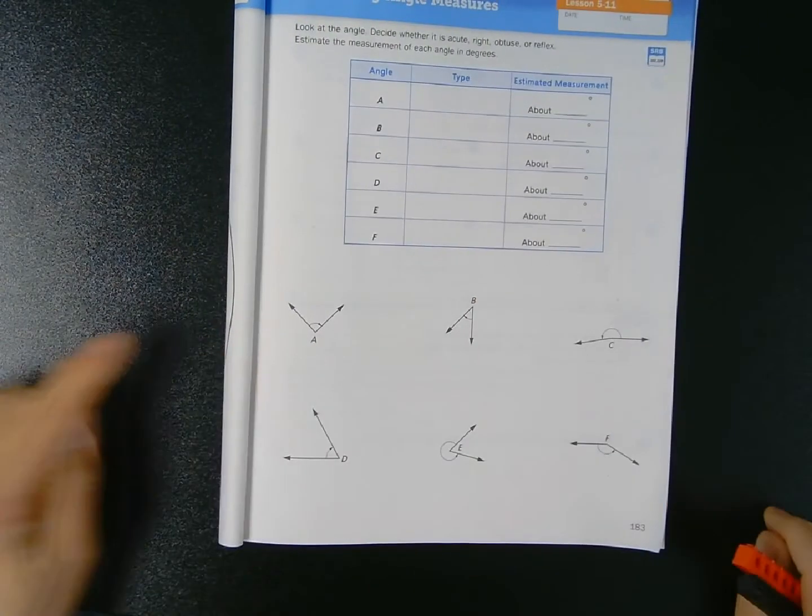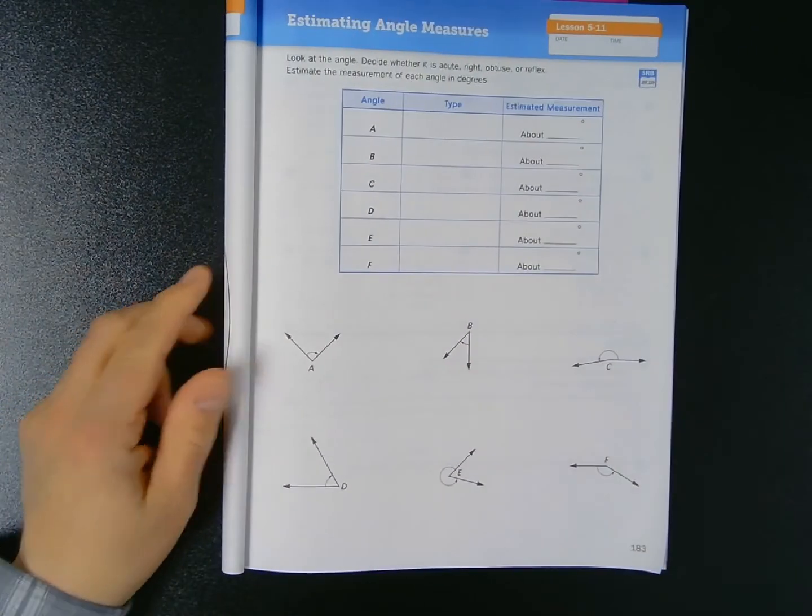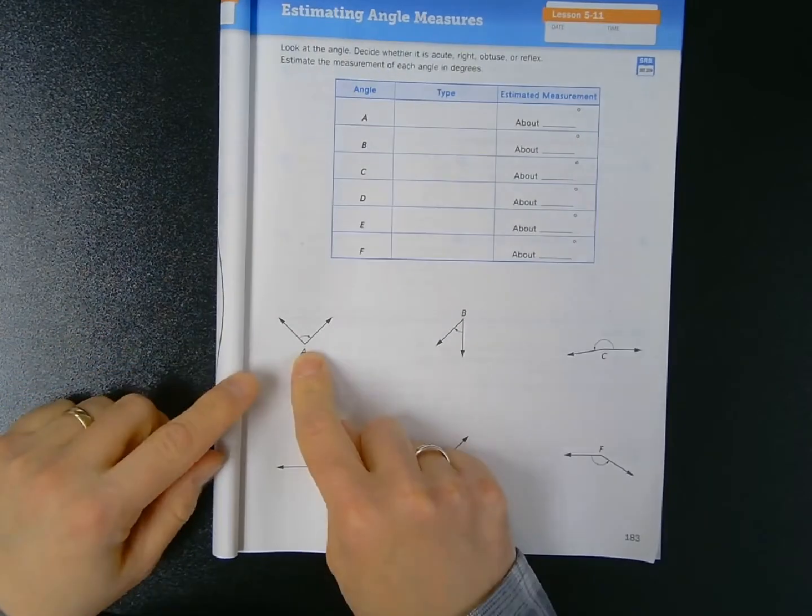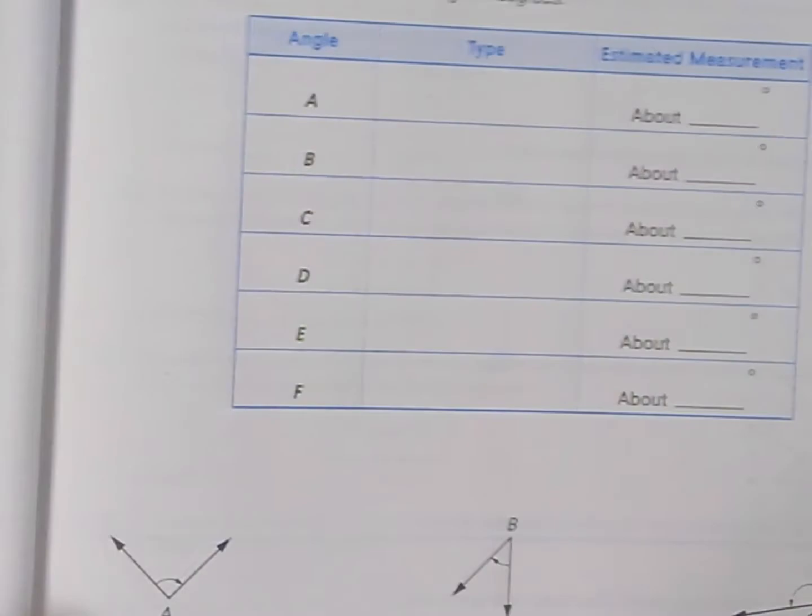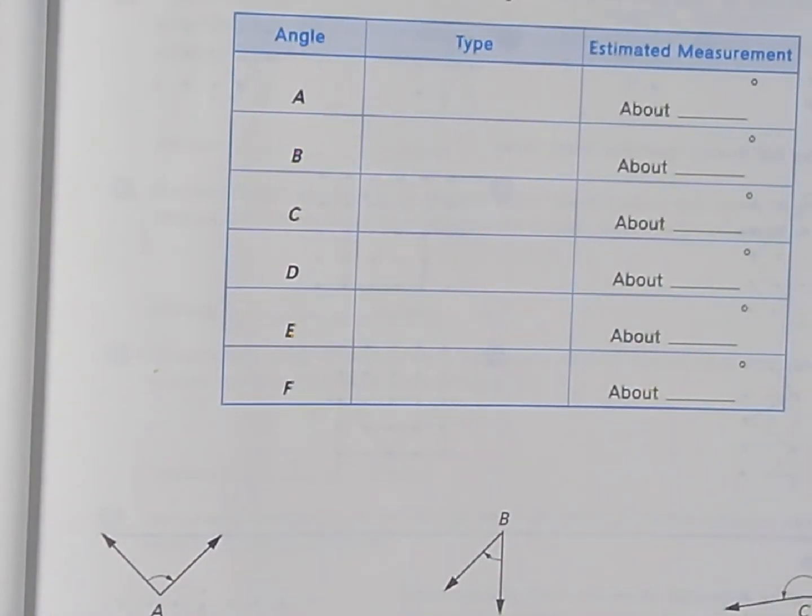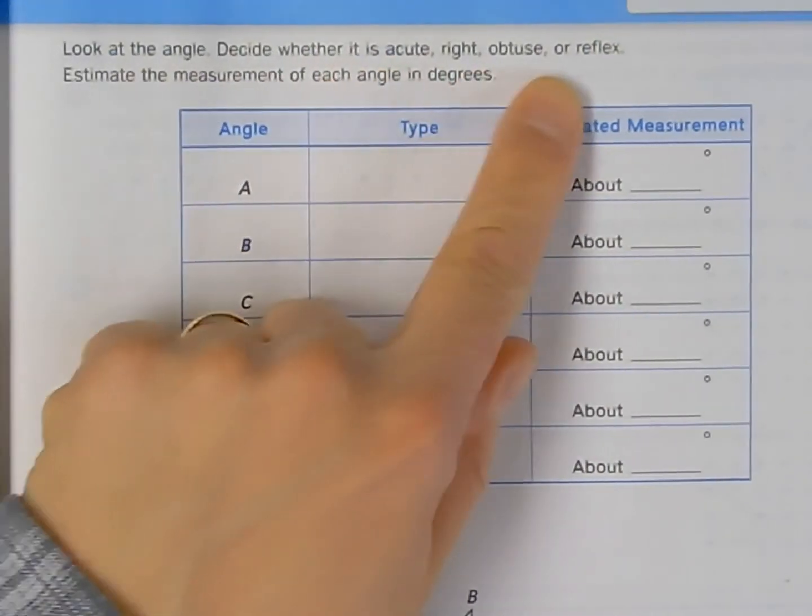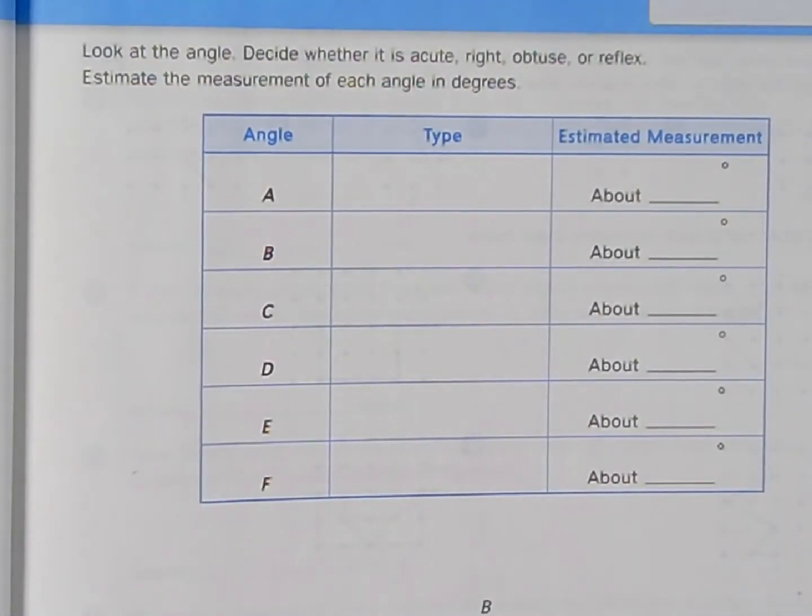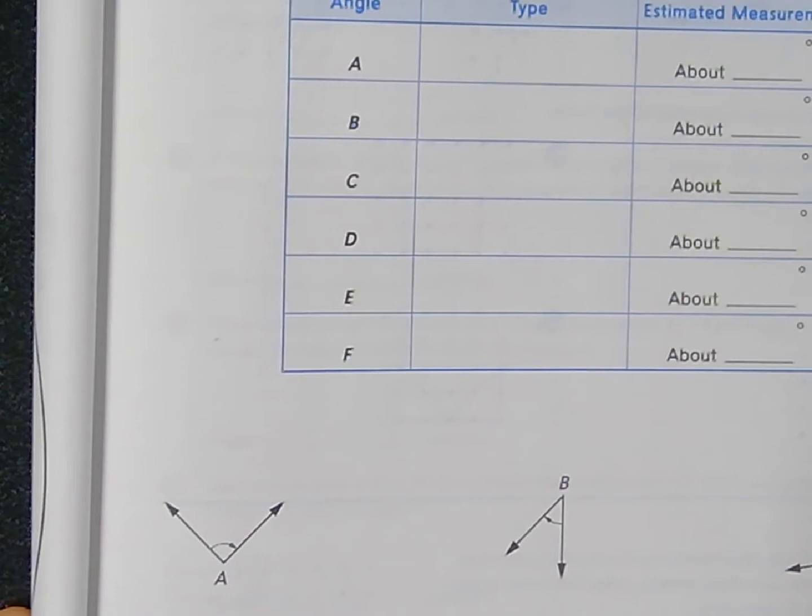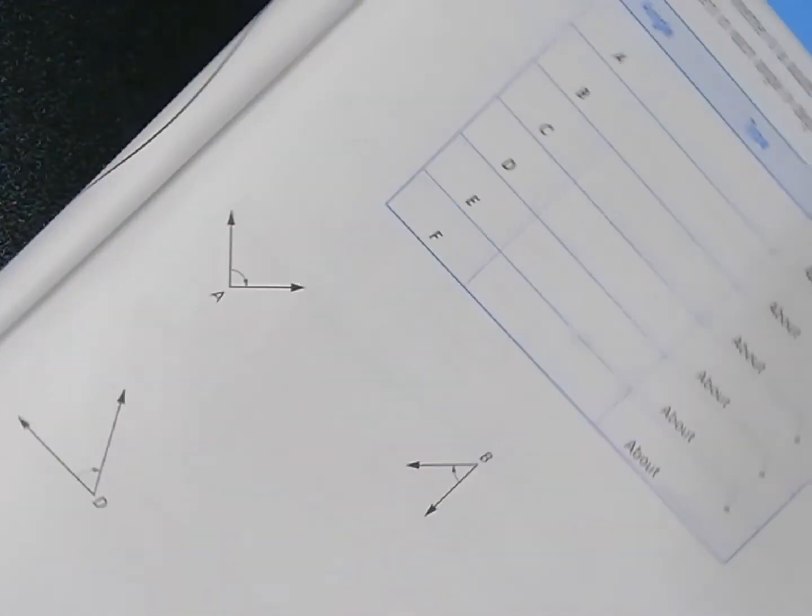Now let's get to our assignment on page 183. I have six angles at the bottom, A through F. I know they're angles A through F because they label the vertex, the point down at the bottom. The instructions say: look at the angle, decide whether it's acute, right, obtuse, or reflex, and estimate the measurement of each angle in degrees. We have to kind of guesstimate about how big we think these angles are.